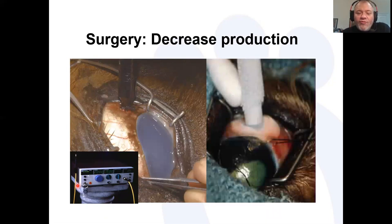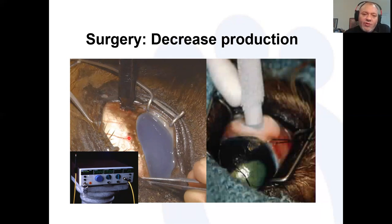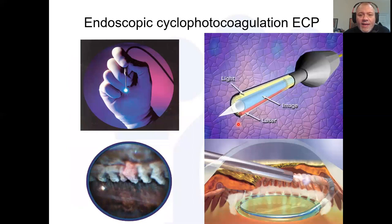Surgically, we used to use trans-scleral laser photocoagulation — a laser probe applied at the limbus — though we still use this in horses. The laser energy passes through the sclera, reaches the ciliary body, and causes it to ablate; we listen for pops to confirm we're in the right place. This is very destructive and causes secondary inflammation making pressure control difficult. We also used to use cyclocryotherapy — freezing the ciliary processes — but this is now reserved as a salvage procedure for blind eyes.